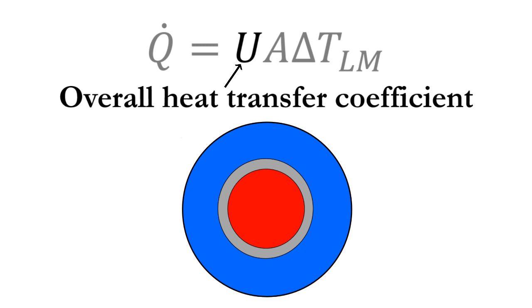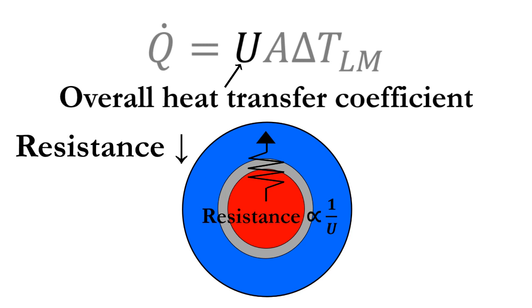U is the overall heat transfer coefficient, which is inversely proportional to the total resistance to heat transfer as heat moves from the hot to the cold fluid. That means that if resistance to heat transfer is low in the heat exchanger, the overall heat transfer coefficient will be high, resulting in a higher heat transfer rate.